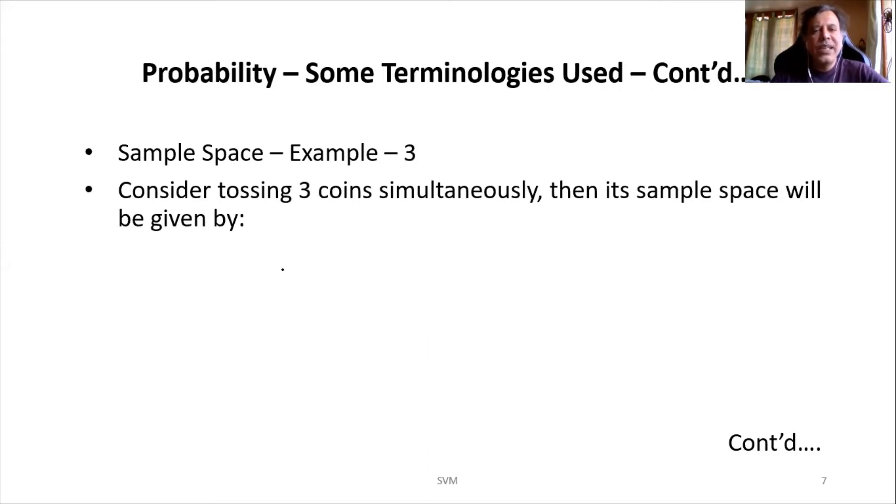It is about tossing three coins simultaneously. So how do we write the sample space? It is easy if you follow this methodology. First, let us write the sample space for two coin tossing experiment. So first, what we will do is we will write the sample space if two coins are tossed, which we already wrote—the same thing I'll be writing.